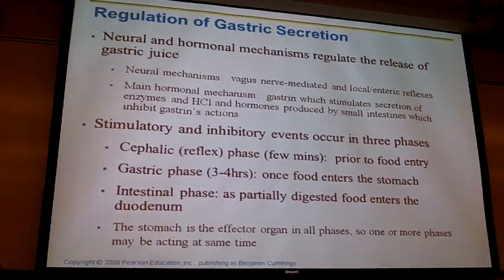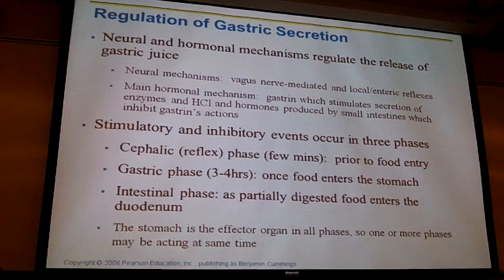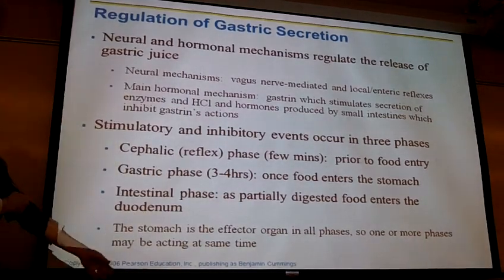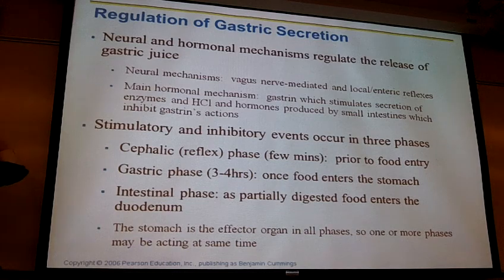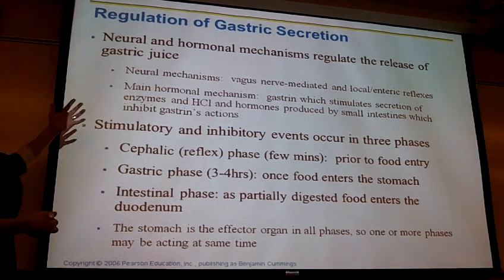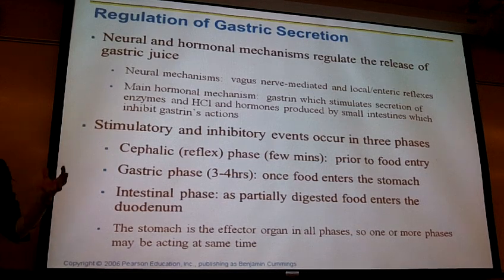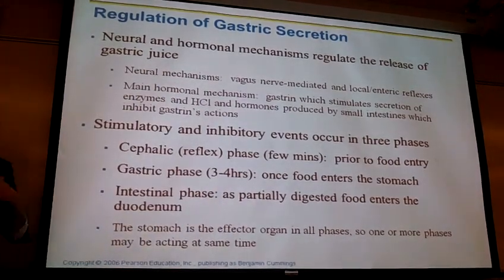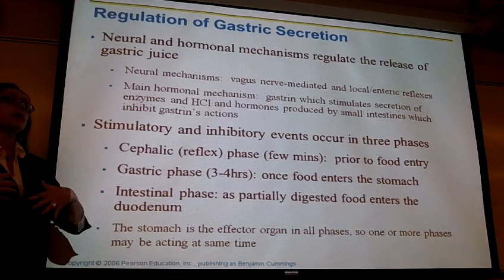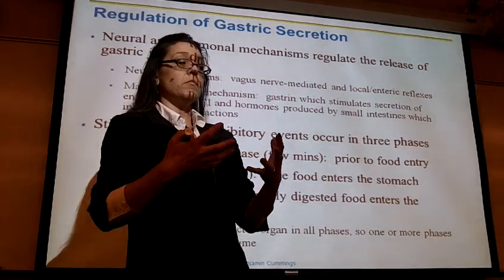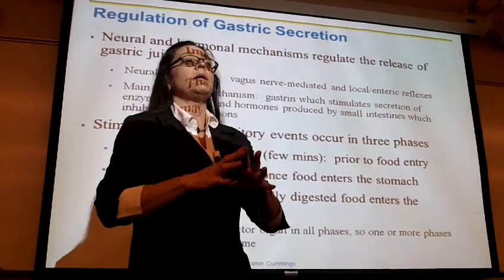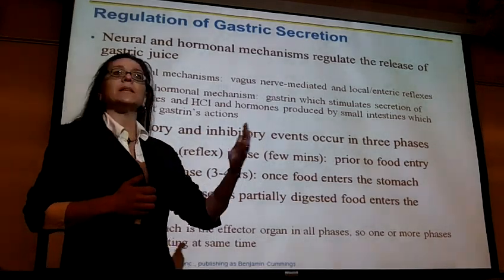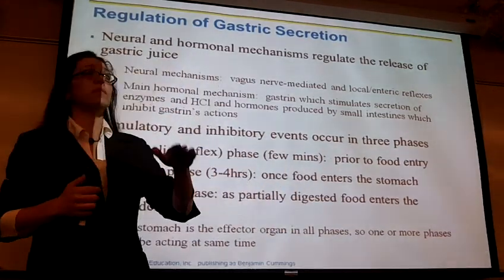We left off talking about the stomach and different secretions coming out of cells within the gastric glands. Now we want to address how those cells know to release these secretions. We're going to have both neural and hormonal homeostatic mechanisms that kick in so the stomach knows there's food coming. These secretions mix with food to break down proteins, unraveling them and cleaving the peptide bonds holding amino acids together.